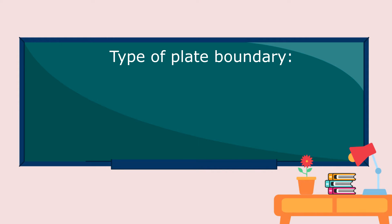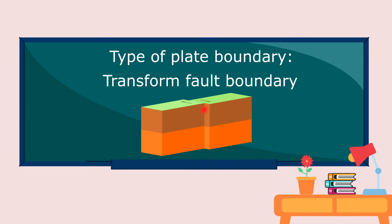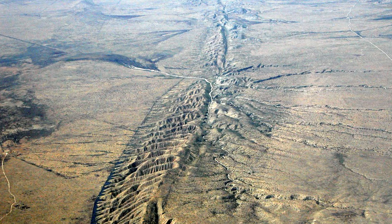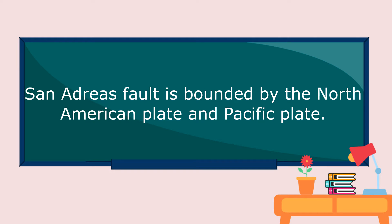There is another type of plate boundary: the transform fault boundary, where the plates slide or grind past each other without diverging or converging. The San Andreas Fault is the best example of this type of plate boundary. It is bounded by the North American plate and the Pacific plate.